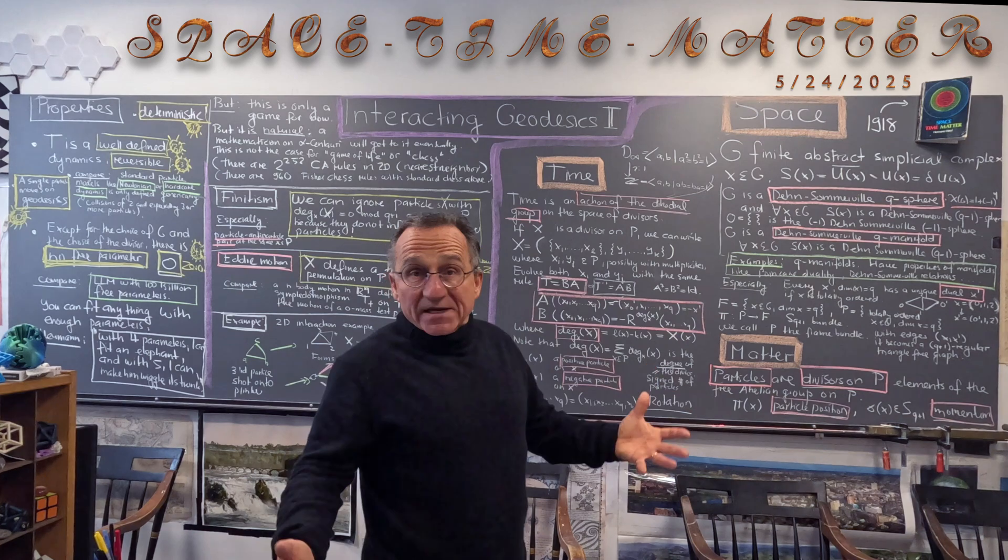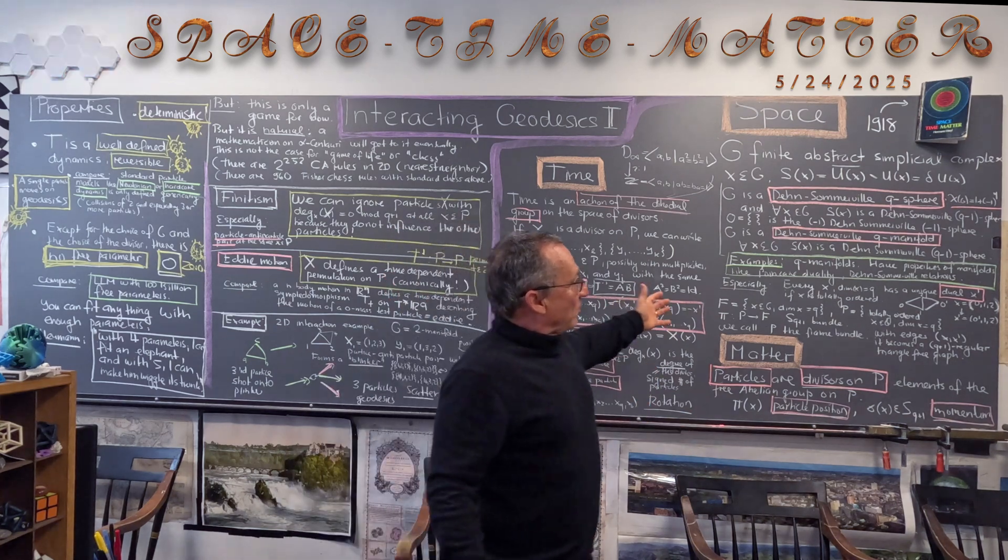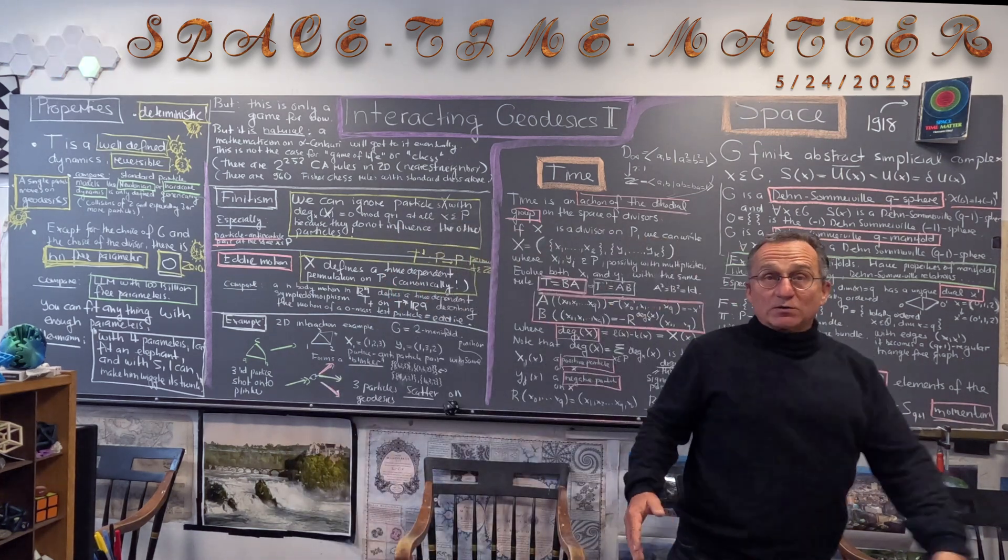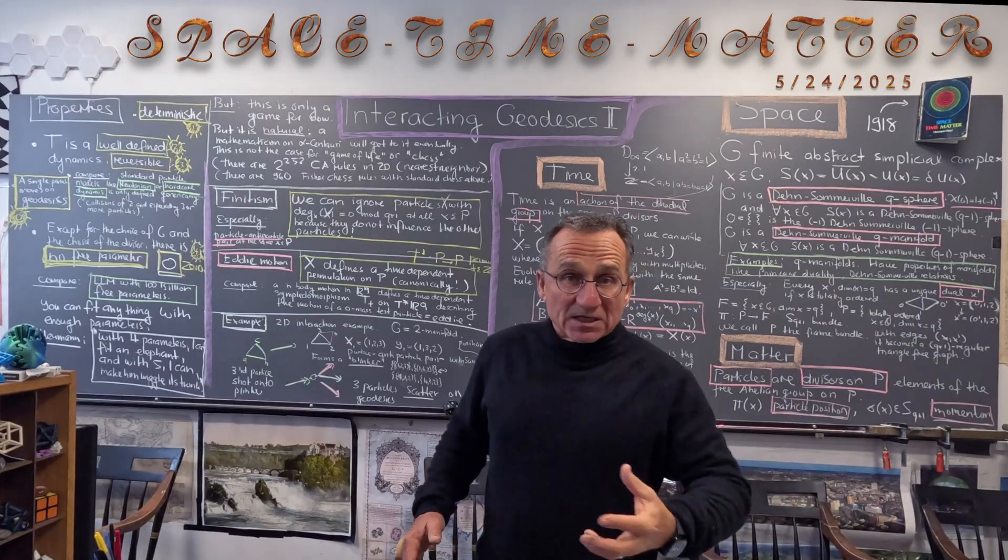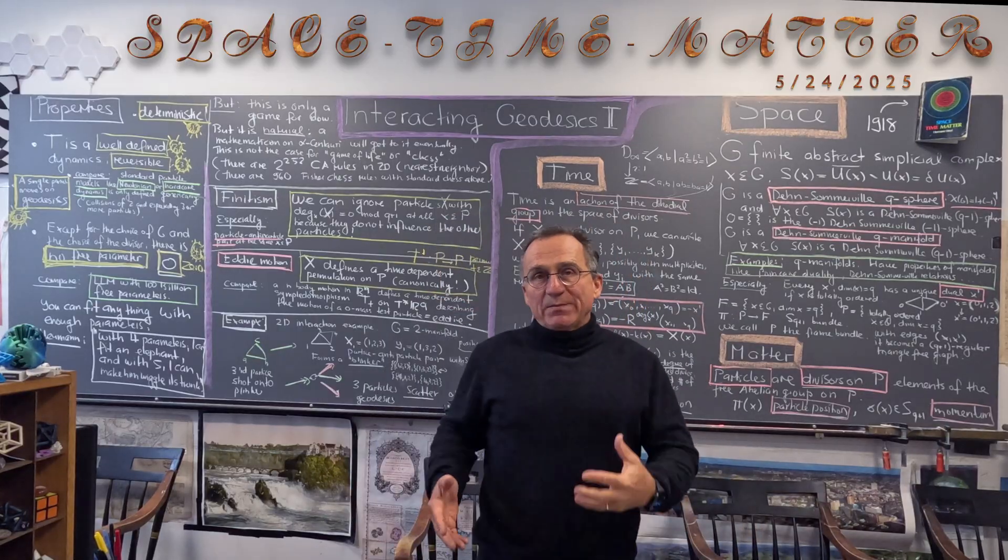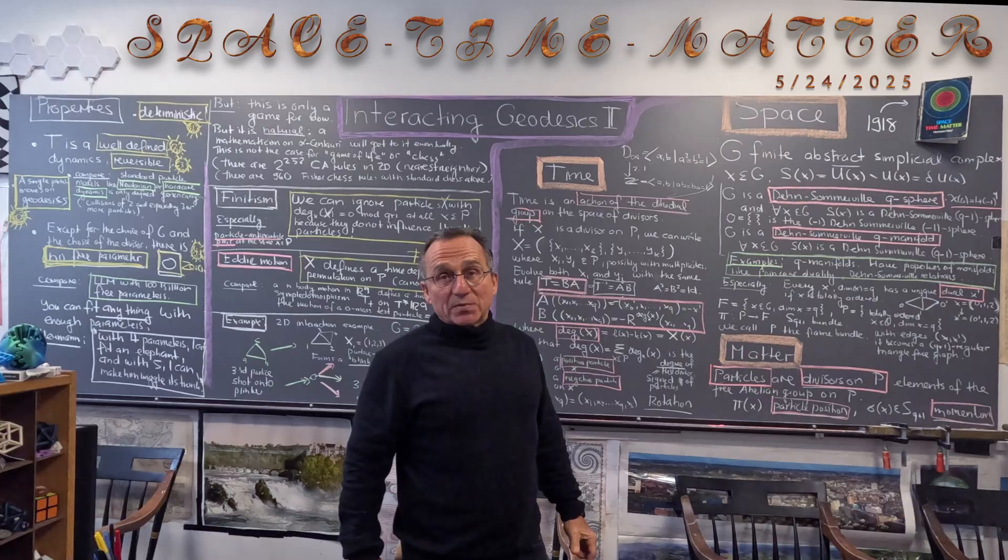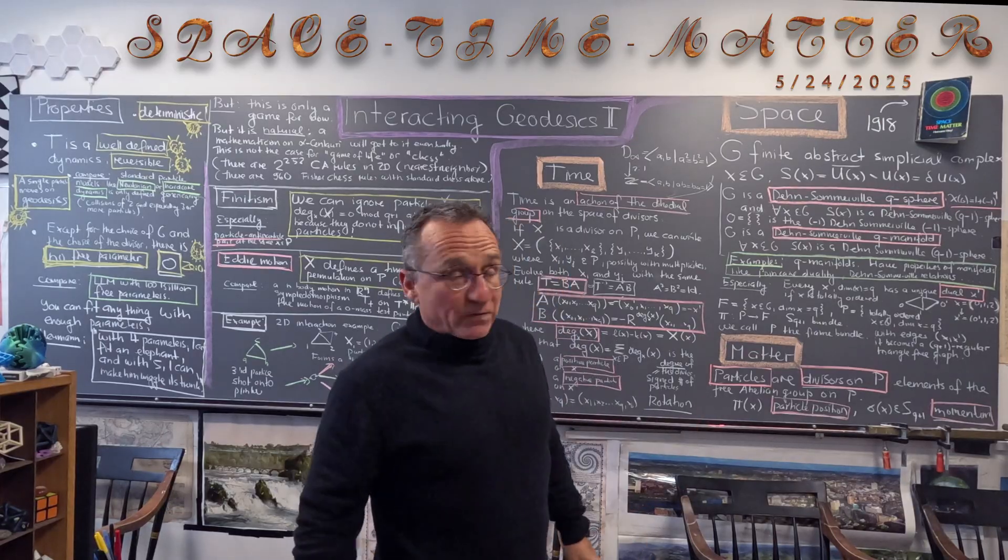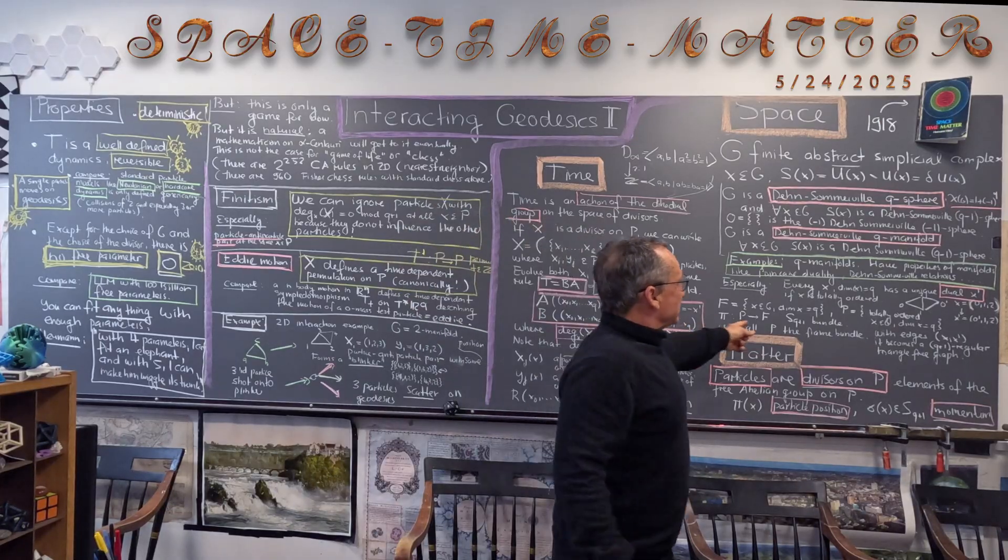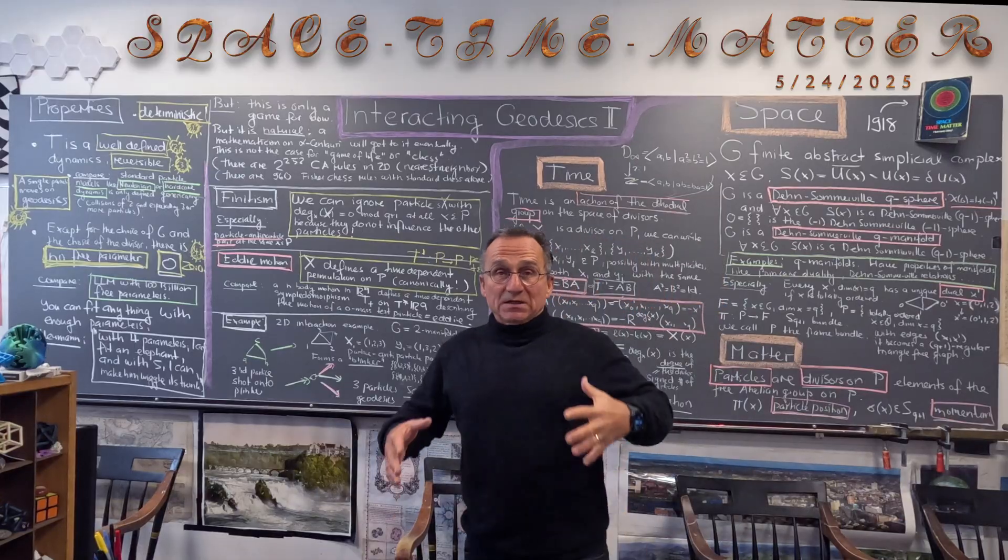That's space and as before we have just, we totally order the facets, we get the frame bundle, a principal frame bundle with a structure group, a commutation group with Q+1 elements. So it's S-Q+1 bundle.